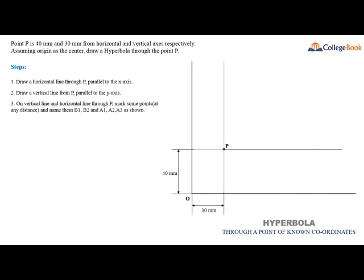3. On vertical line and horizontal line through P, mark some points at any distance and name them B1, B2 and A1, A2, A3 as shown.